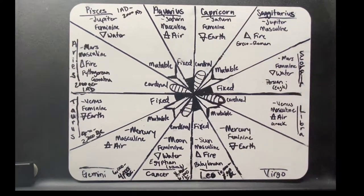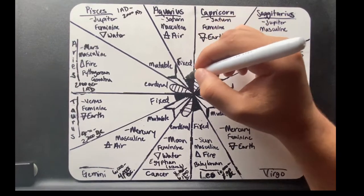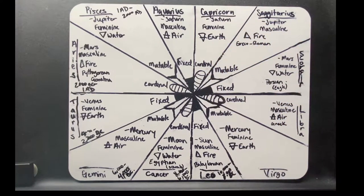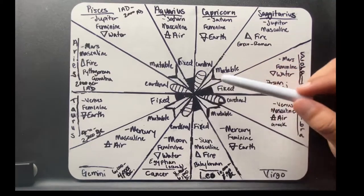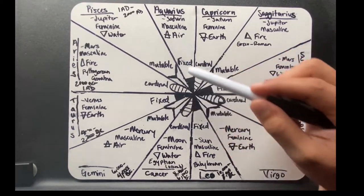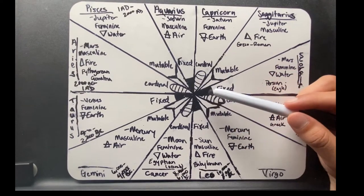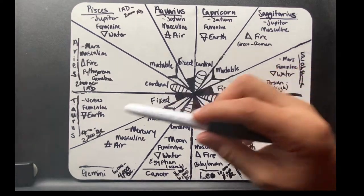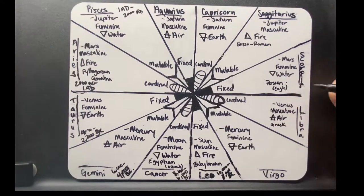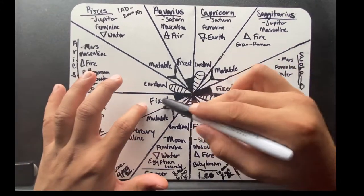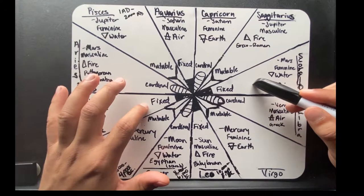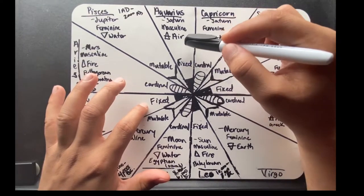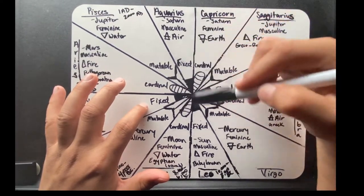For the final piece, there's actually three crosses. You have the fixed cross, which is colored in right here, and they're actually all at right angles to each other. You have Taurus and Scorpio—notice how they're both feminine. That makes this the feminine fixed axis.